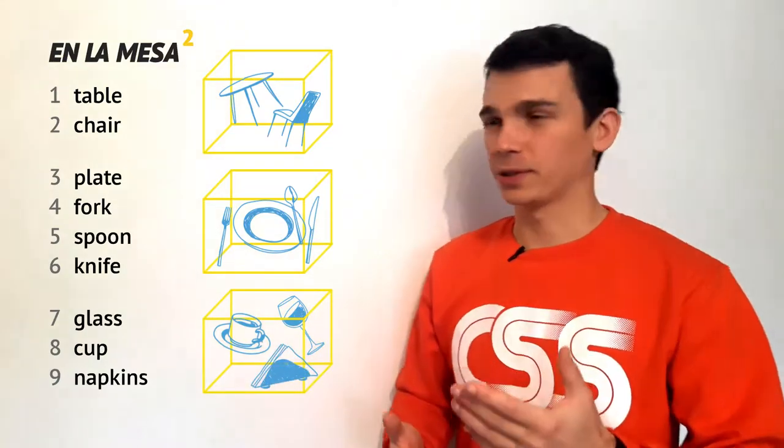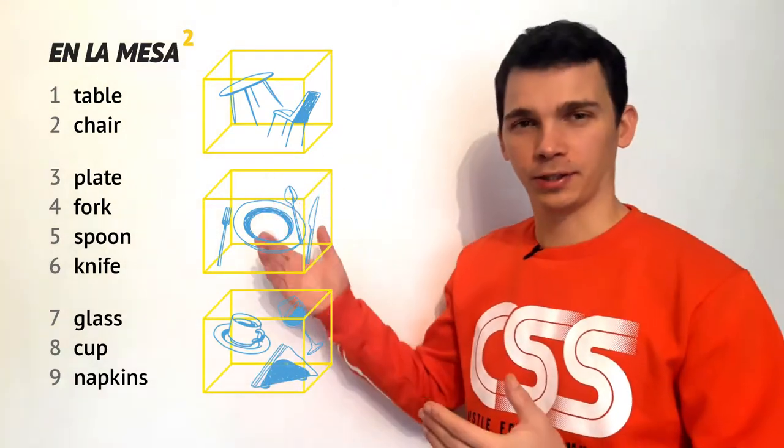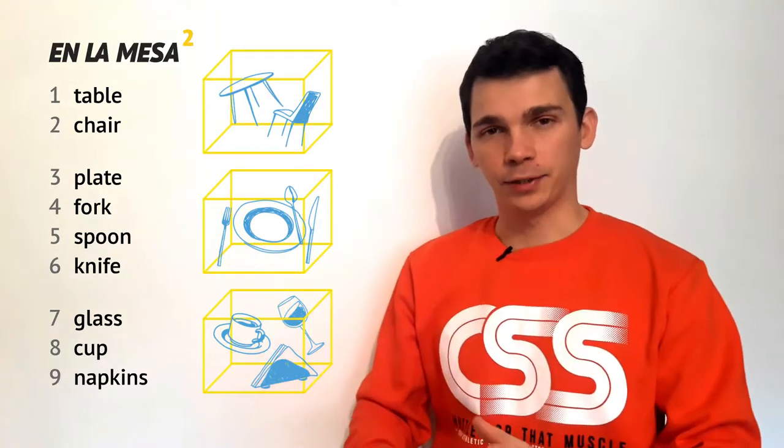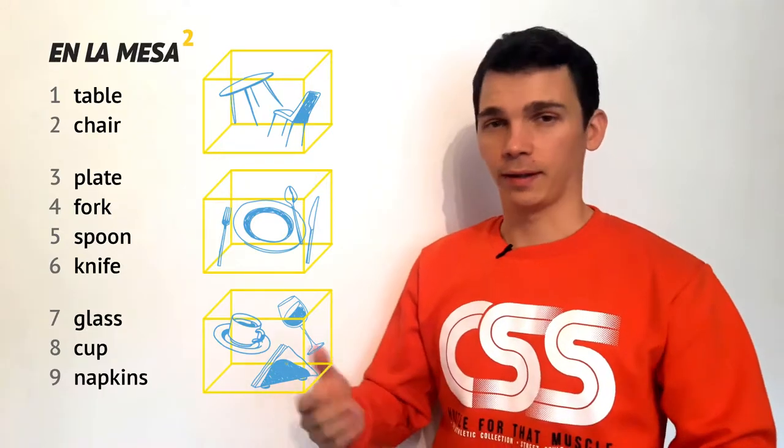So let's do it one more time. First a table and a chair. Then on the table we have four objects: a plate, fork, spoon and knife.